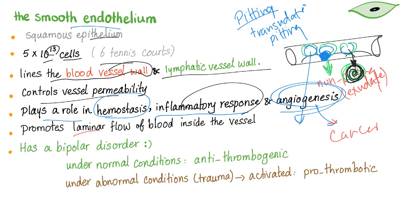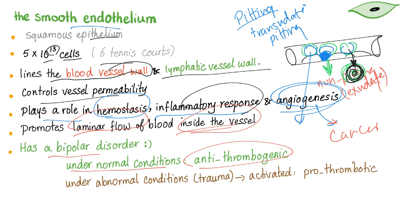The smooth endothelium promotes laminar blood flow inside the vessel — the harmonious antagonism: endothelium wants blood to flow, platelets want it to clot. Think of the endothelium as having a bipolar disorder: under normal conditions it's antithrombogenic, it hates thrombus. But under abnormal conditions like trauma, it activates, becomes prothrombotic, and works with platelets to form a blood clot and stop bleeding.